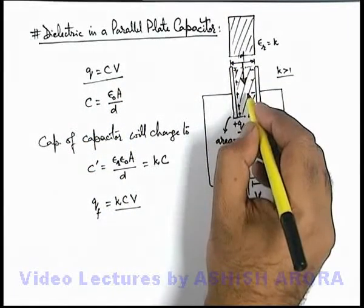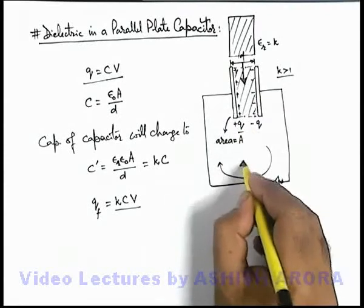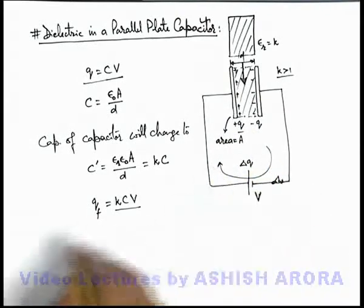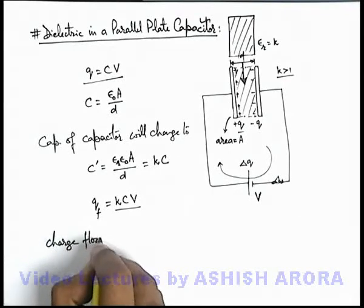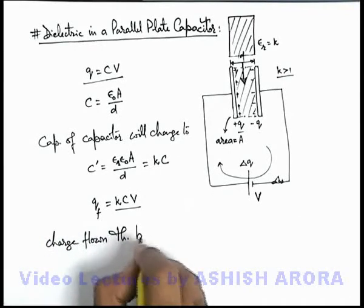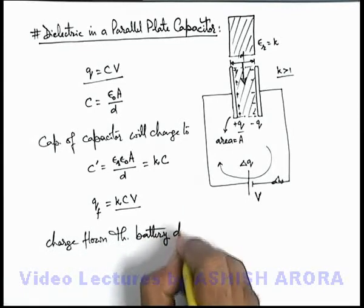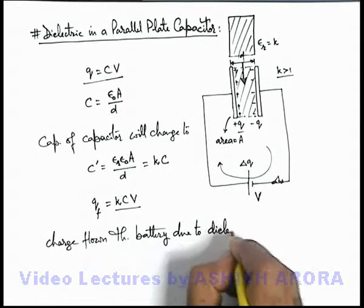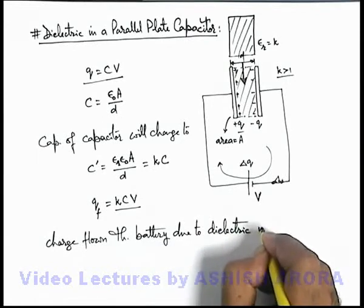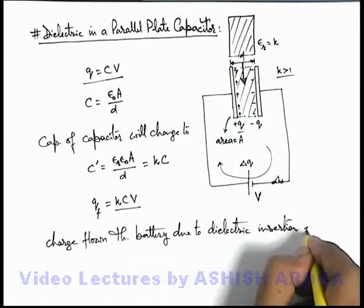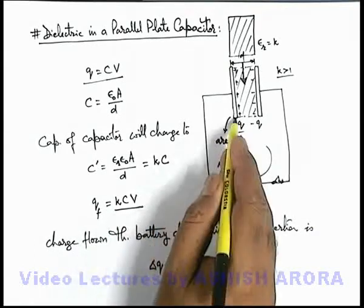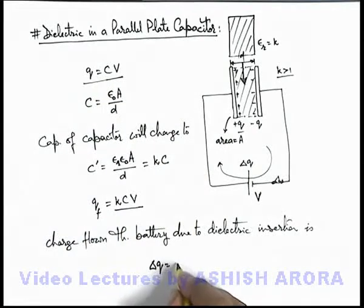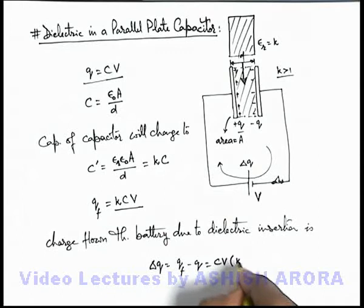That means on insertion of dielectric slab, some more charge delta q will flow through the battery, and we can easily calculate the charge flown through battery due to dielectric insertion. This delta q can be written as—we know final charge on the plate is kCV, initial is CV—that means it must be q final minus q initial, that will be CV multiplied by k minus 1.